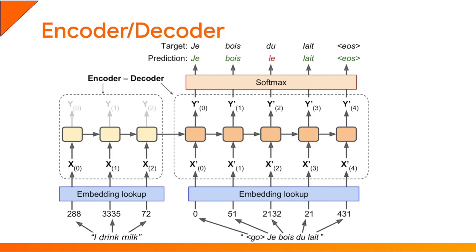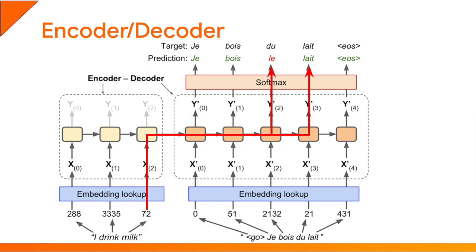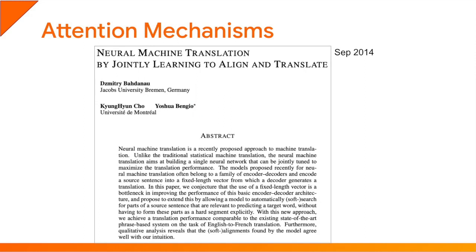Unfortunately, the encoder-decoder architecture produces disappointing results when trying to translate long sentences. The RNN must remember a word like 'milk' for a long time before producing the translation, and must remember many other words at the same time. This makes it very hard for the encoder-decoder to produce good translations for even moderately long sentences. This is where attention mechanisms come in.